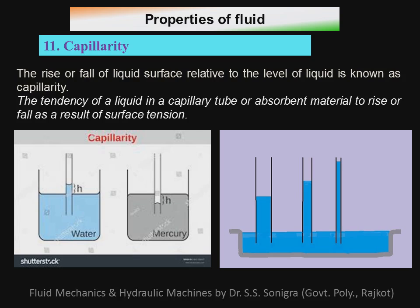Similarly, if instead of water we use mercury and insert a capillary tube, there will be a fall (depression) of mercury inside the tube. In this case, adhesive force is higher. Whenever adhesive force is higher, there is a fall. Also, capillary action is inversely proportional to the diameter of the tube — as diameter reduces, the rise increases, and vice versa.